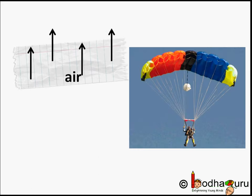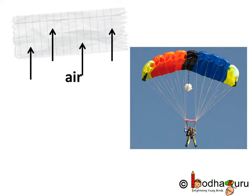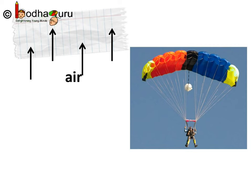The air offers resistance due to friction to the falling objects. This resistance offered by air to paper is much more than the resistance offered to the box. And it is just how a parachute works.